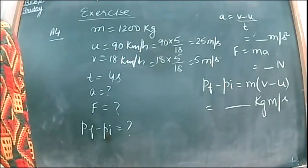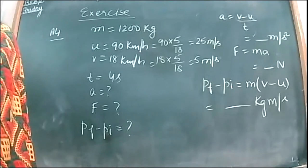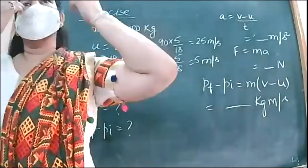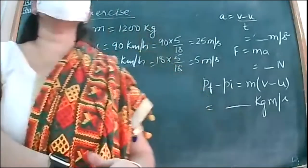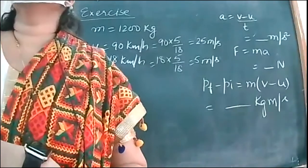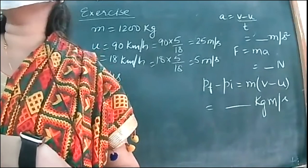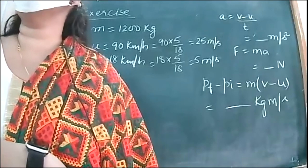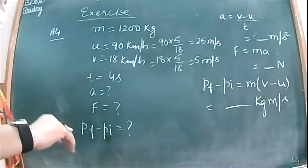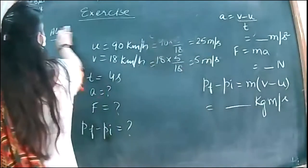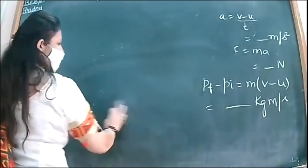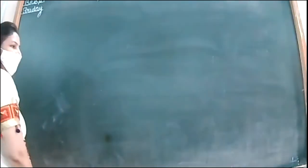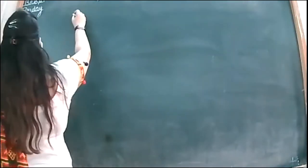Two objects, one lighter and the other heavier, have the same momentum. Which of them is moving faster? We have to prove it mathematically using only the formula of momentum.